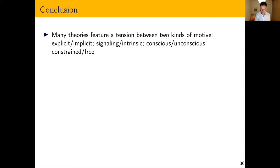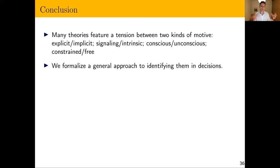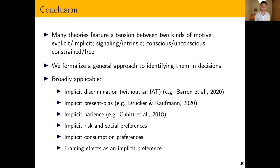To summarize: there are many theories featuring a tension between two kinds of motives — explicit versus implicit, signaling versus intrinsic, conscious versus unconscious. We've formalized that into a general model of implicit preferences: those that become stronger in more opaque settings, identifiable in decisions. We think there are very broad applications — implicit discrimination, implicit present bias or patience, and more — and we're happy to open up for Q&A.